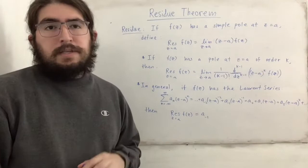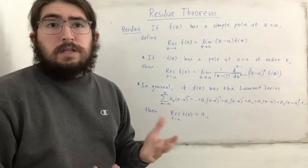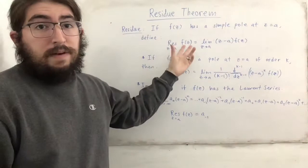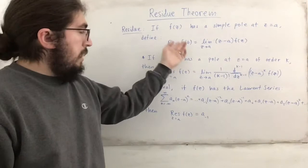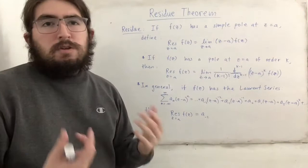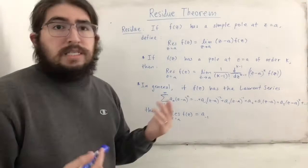So first off, exactly what is a residue? We say that if f of z has a simple pole at z equals a — that just means z equals a will result in a zero denominator of the function — then we define the residue evaluated at z equals a of f of z. That is written as res, as z equals a, of f of z.